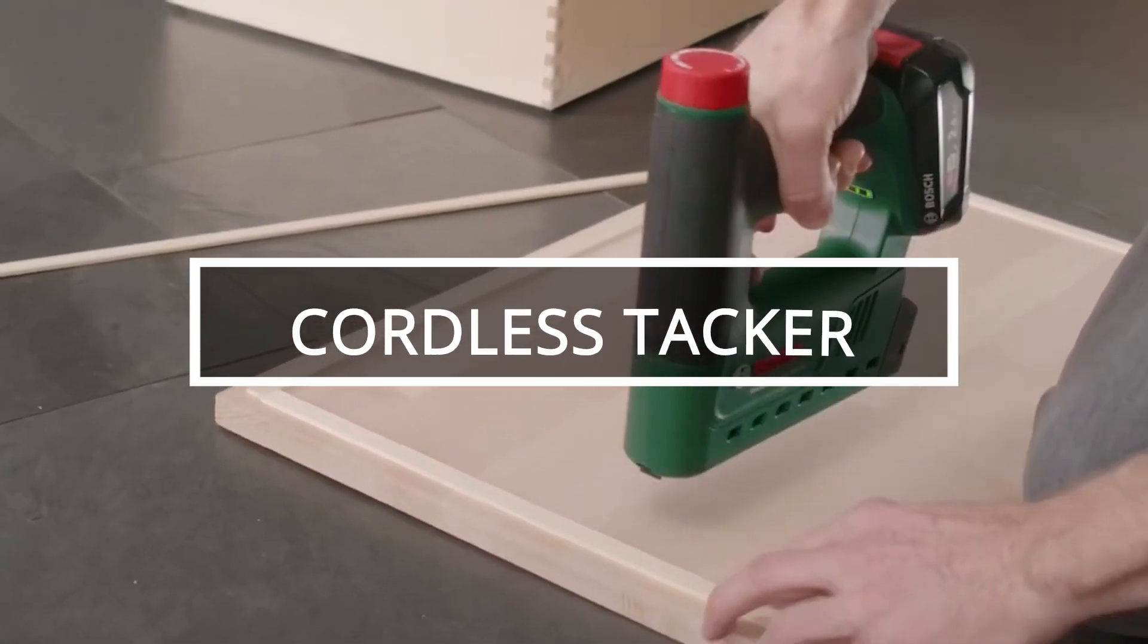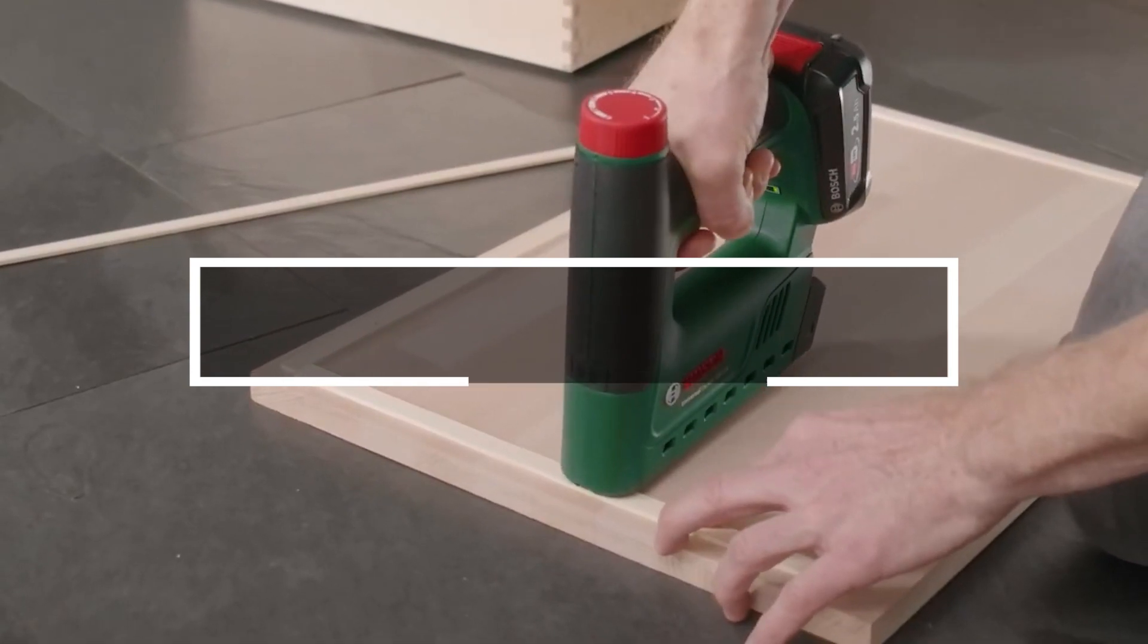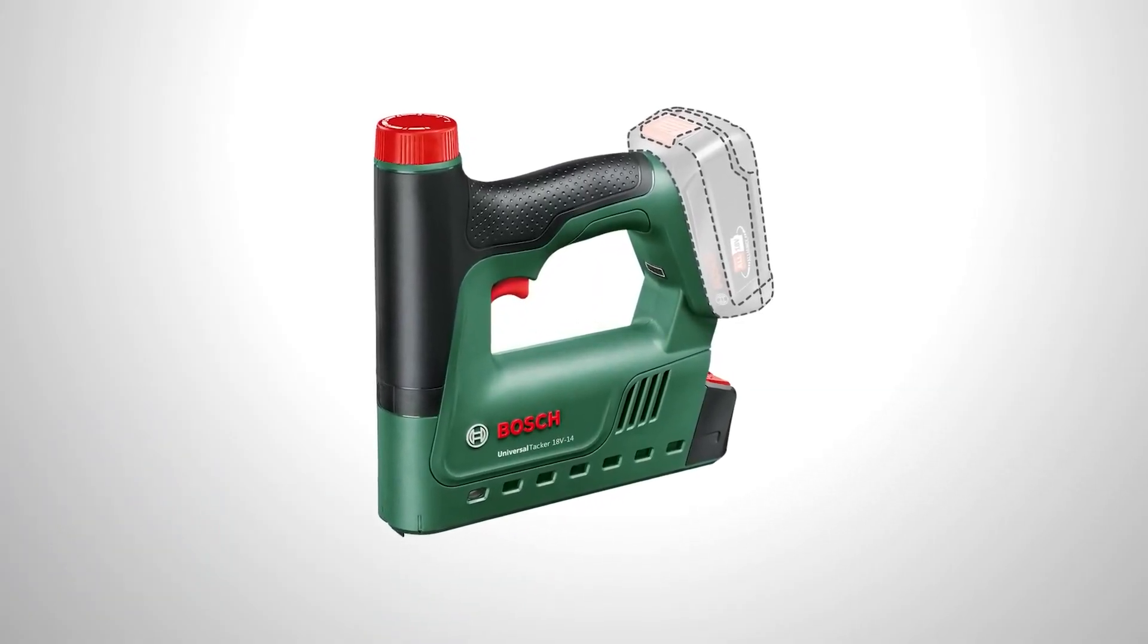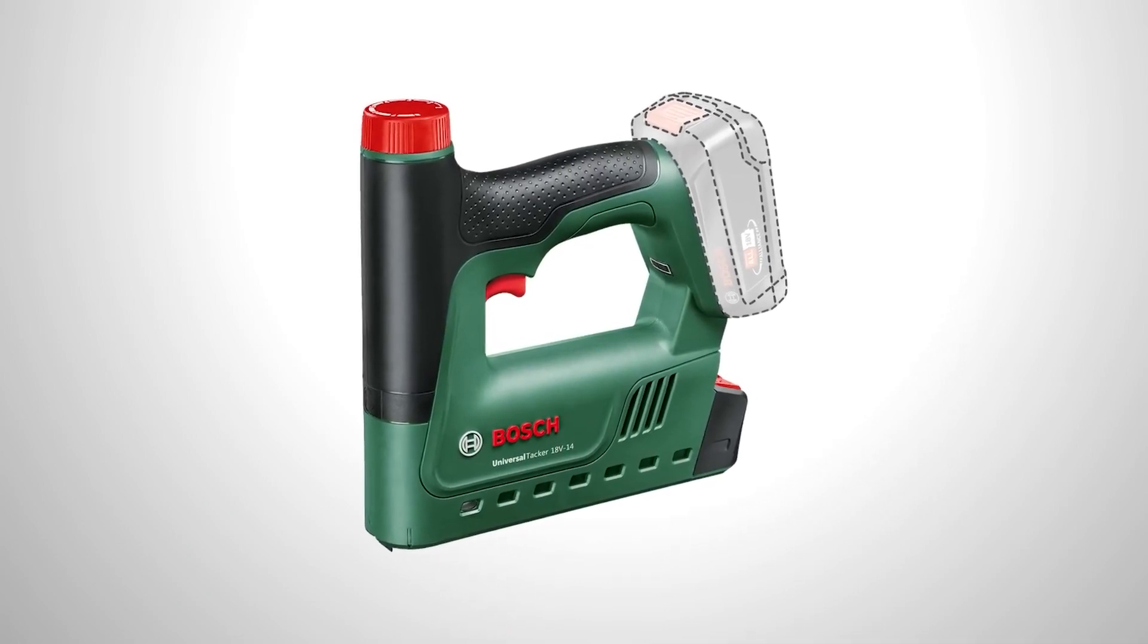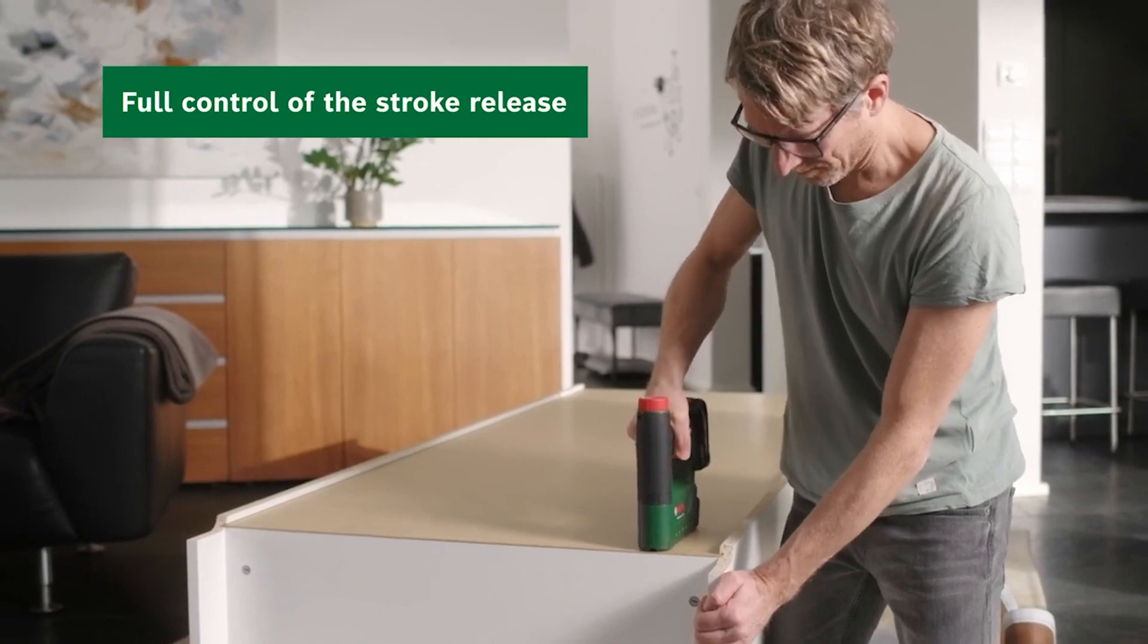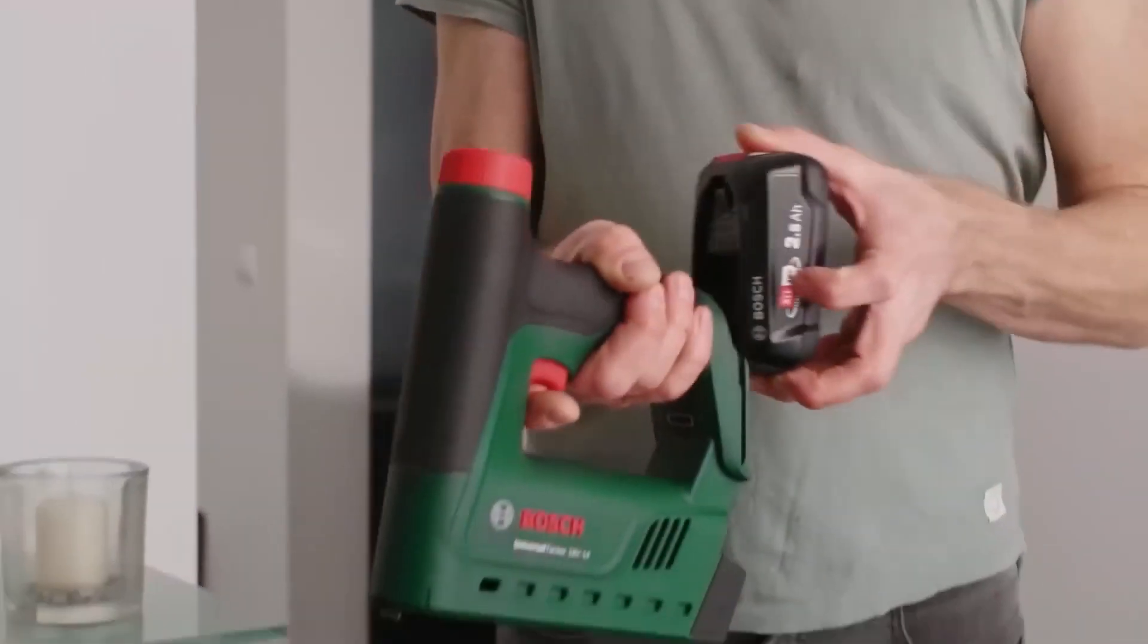Cordless tacker. Here's an exciting new product from the renowned German company Bosch: a cordless tacker designed for effortless nail and staple work. This innovative tool is part of the 18 volts Power for All system, meaning you can use the batteries from other Bosch tools with this one.